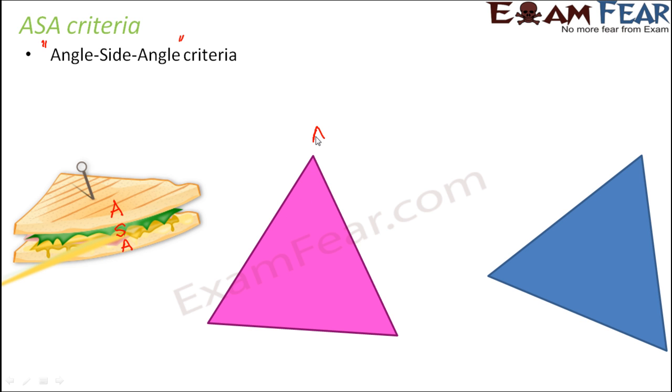Now looking at this triangle, let us call this triangle as ABC. So can you tell me if I am talking about two sides AB and BC, which would be the sandwiched angle between AB and BC? Yes, that would be angle B. So this angle B is sandwiched between AB and BC. Right?